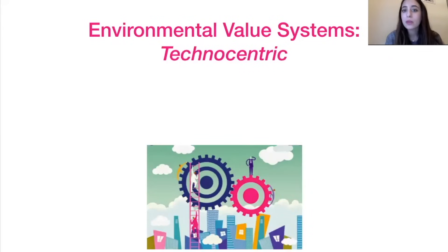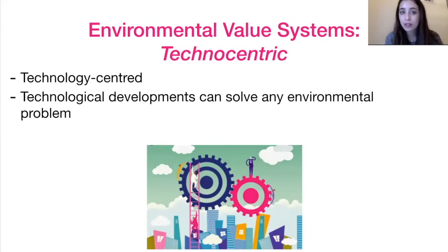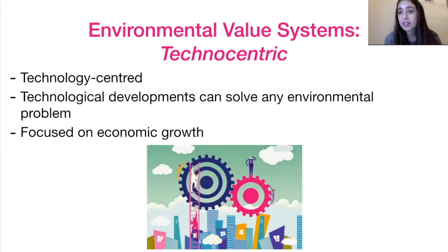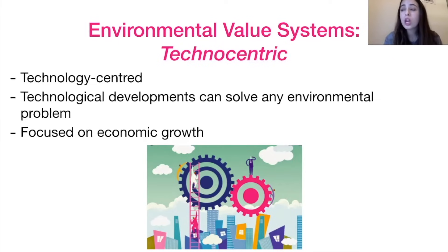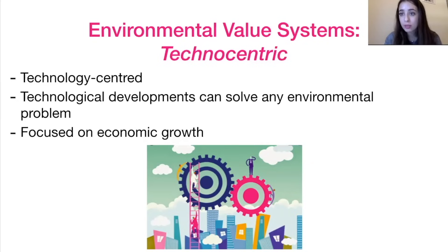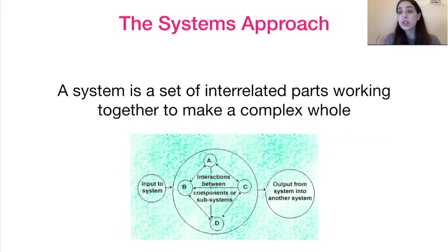And finally, at the other extreme, we have technocentrics. They think that technology is able to solve any environmental problem we face — from reaching our carrying capacity, to fossil fuel use, to acid deposition. Through science and technology, they believe we can solve any environmental problem, and they really focus on economic growth as a priority.